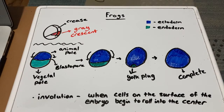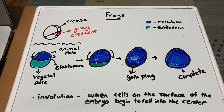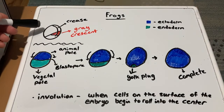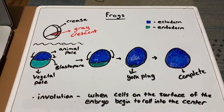Gastrulation in frogs is slightly different than that found in sea urchins, although both have three germ layers. Gastrulation for frogs begins on the dorsal side of the blastula, located where the gray crest is. The cells on the dorsal side begin to invaginate, or push inward. This invagination is known as a blastopore and causes a crease along where the gray crest is. The blastopore slowly extends around both sides of the embryo and meets together on the ventral side, making a complete circle.